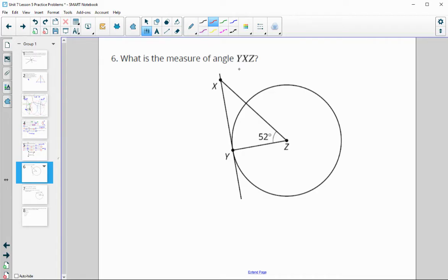Number six, find the measure of angle YXZ. We've got a tangent to the circle. So this is a 90 degree angle. Then we know the two angles in a right triangle. The two acute angles total 90. So we will just subtract 52 from 90 to get 38. You can also just subtract both from 180. So you could do 180 minus 90 minus 52 as well and have gotten 38.